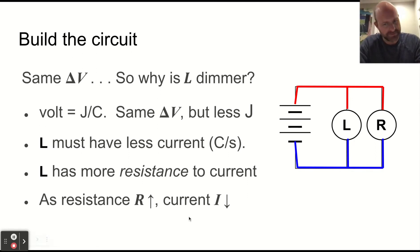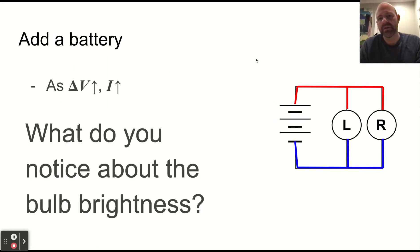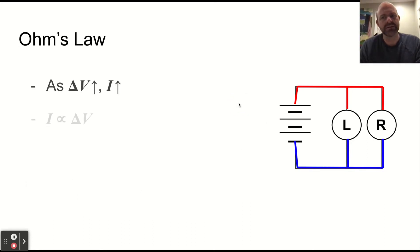This tells us then, if we know that the resistance is less, then we get more current. More resistance, less current. What do we notice about the bulb brightness? As the voltage and the current increase, the brightness increases. So the current is proportional to the voltage, and as resistance goes up, current goes down.